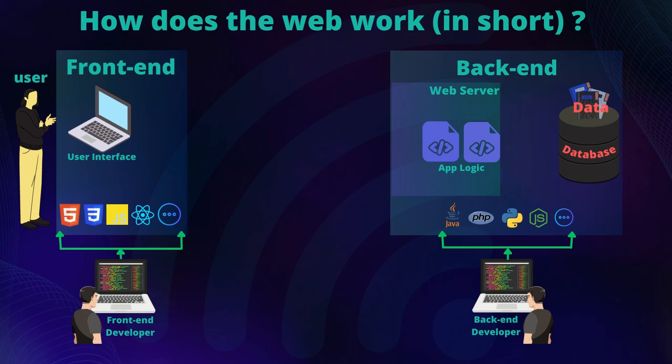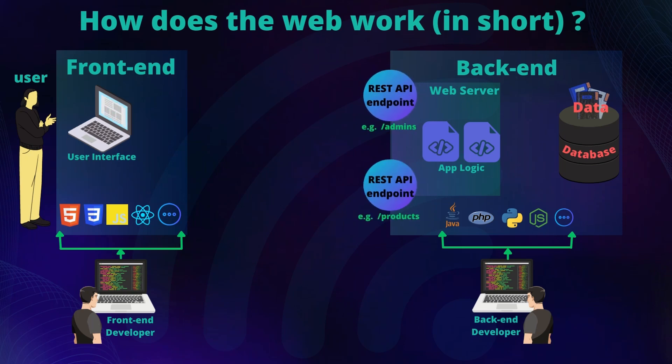But how does the front end communicate with the back end? Well, in order to connect the front end to the back end, the back end has to make some parts accessible to the front end. These accessible parts are called API endpoints. API stands for Application Programming Interface. An API allows the front end to make requests to the back end.